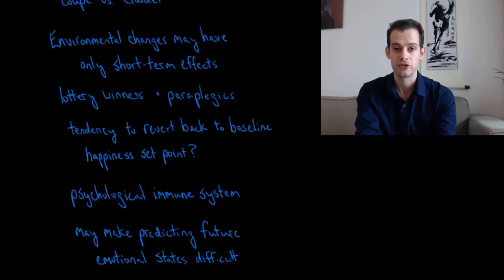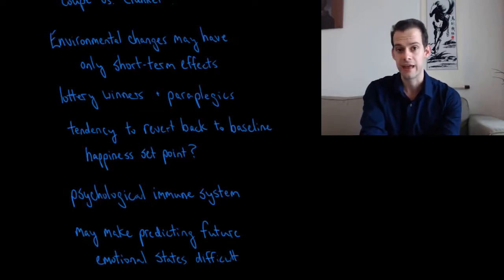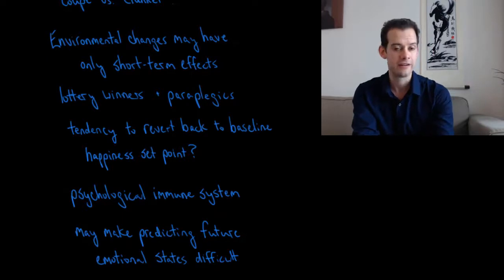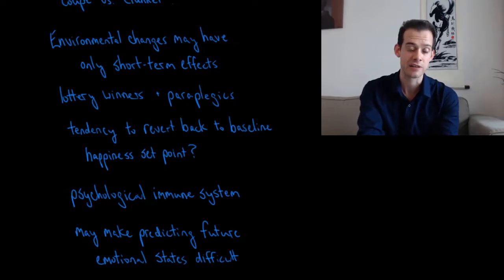People tend to return to their baseline level of well-being despite these large environmental changes. If you were to suffer an accident and become paralyzed, you might think this would have a strong effect on your well-being, and in the very short term it would. But over time you'd probably end up about as happy as you are now. The same is true if you won the lottery. You might think this would permanently change your life, that you'd just be euphorically happy for the rest of your life, but that turns out not to be the case. You'd be happy for a little bit and then this would dissipate and you'd gradually return to your happiness set point.